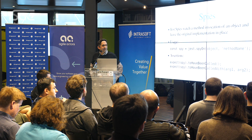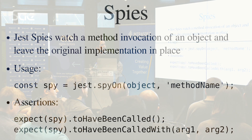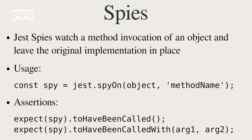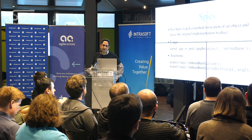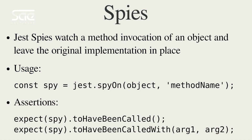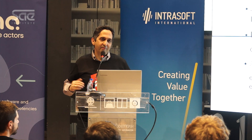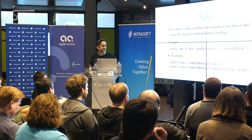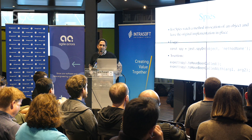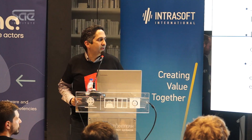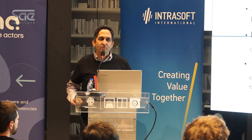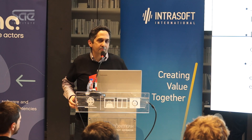The second capability is spies. Jest spies watch a method invocation of an object in our unit, but leave the original implementation in place. Contrary to other frameworks such as Mocha and Jasmine, Jest will invoke the spied method — that is, it will invoke the real implementation — but it also gives us the possibility to provide a mock implementation with further coding. The usage is jest.spyOn(), where we provide the object and the method name we want to spy on. We assert that the spy has been called using toHaveBeenCalled() and toHaveBeenCalledWith(), providing the arguments with which the method was called.